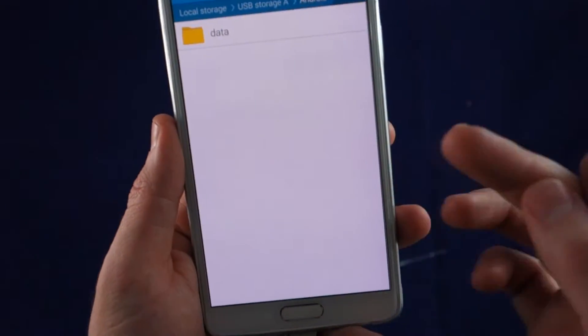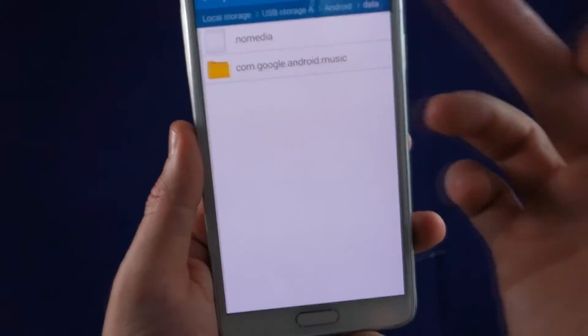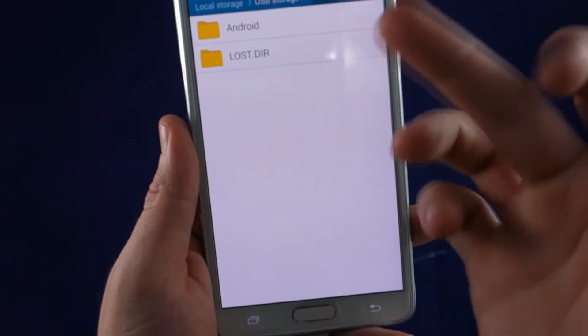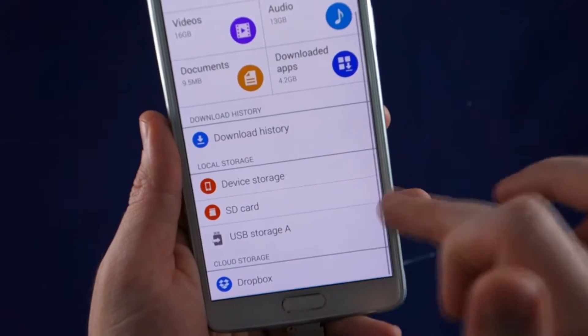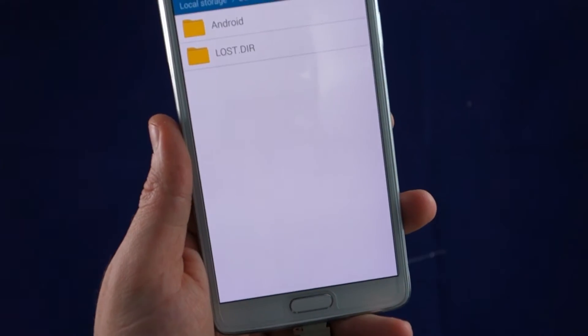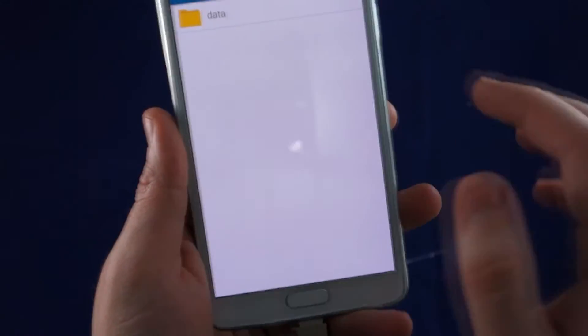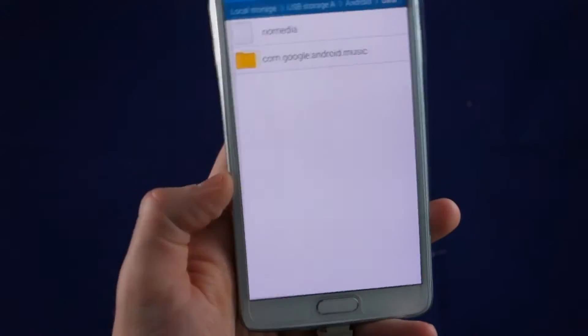Obviously there's nothing on this yet so this is just local storage. We go USB storage A, these are just files I guess my phone created in order to use it.